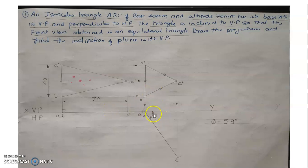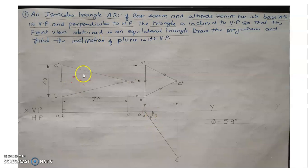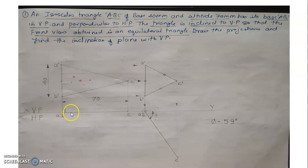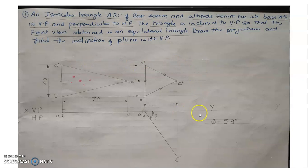In the final condition, they have not given the inclination of the plane with VP directly. They have stated that the front view obtained is an equilateral triangle. So we cannot draw the inclination directly. Because this isosceles triangle is inclined to VP in such a way that the front view appearing is an equilateral triangle. So draw faint parallel lines to the reference line from B', from C', and from A'.